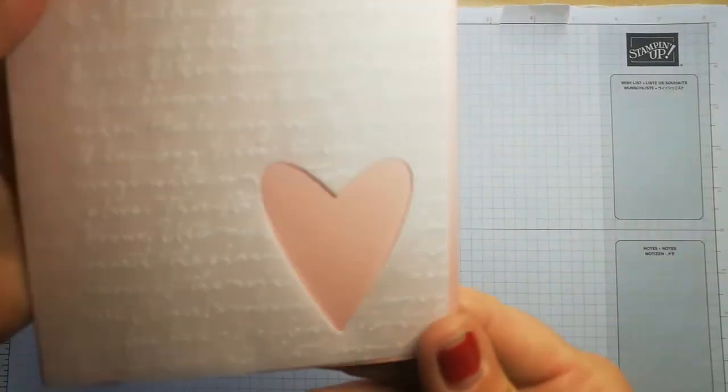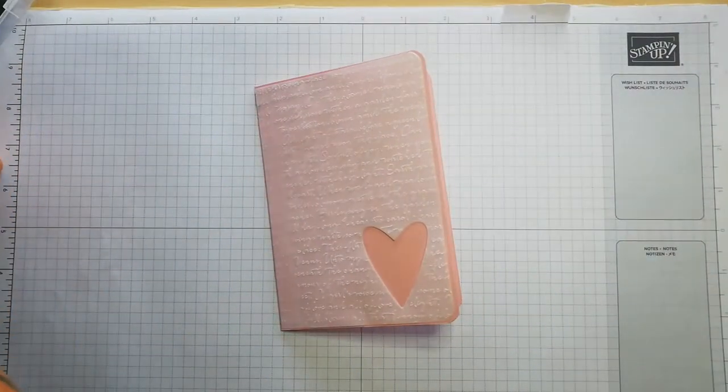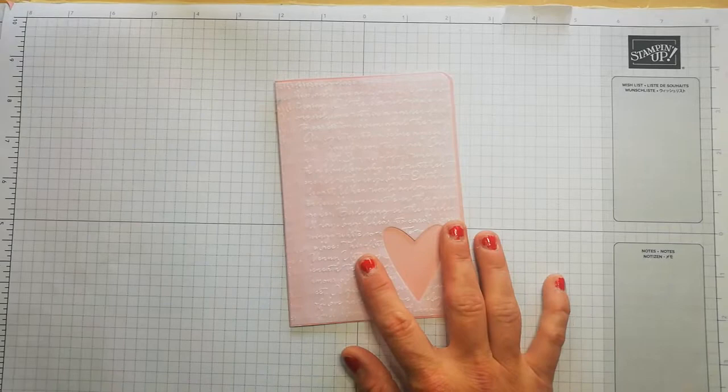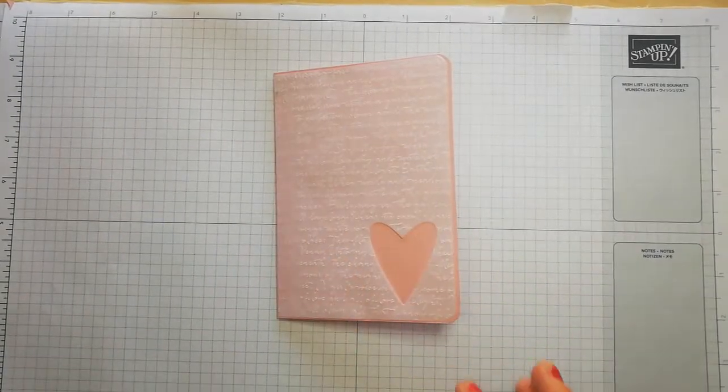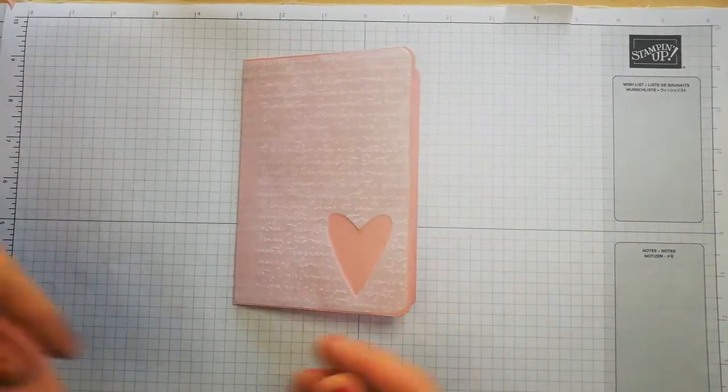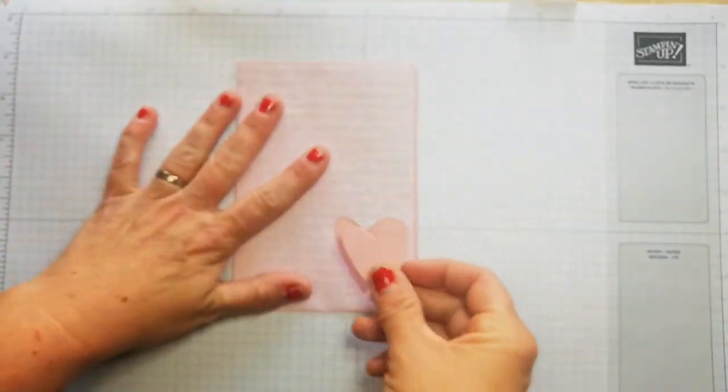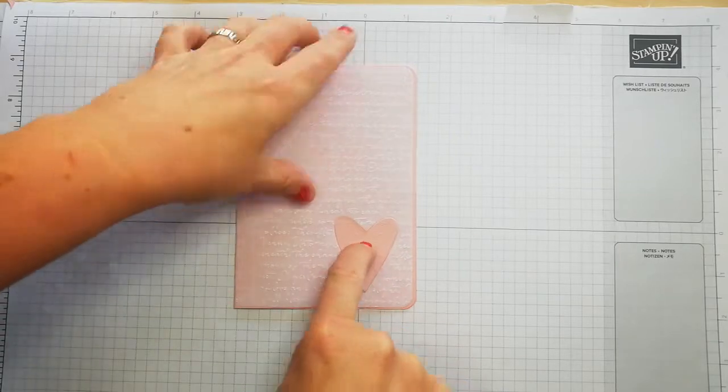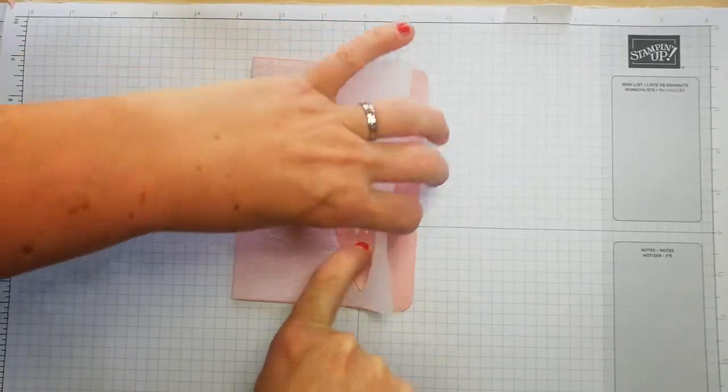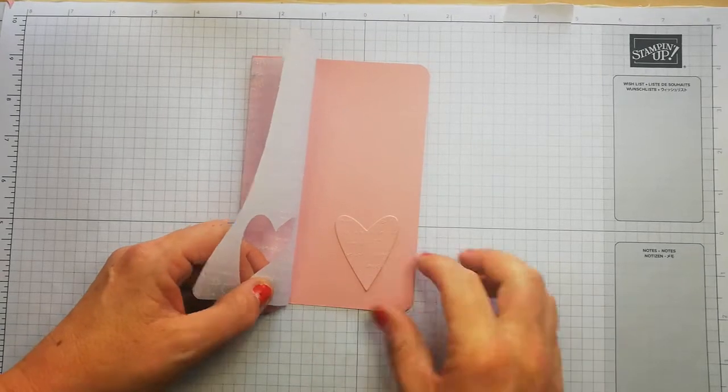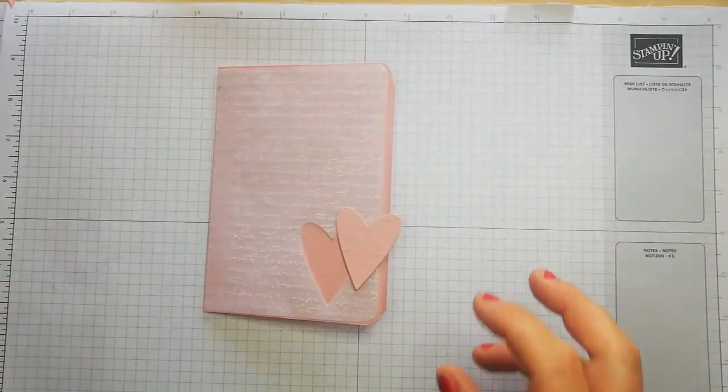Isn't that adorable? I actually cut out on the same color cardstock and embossed a little heart. That is going to be placed inside there, so when you open that, that is standalone. So if I glue that in just now.